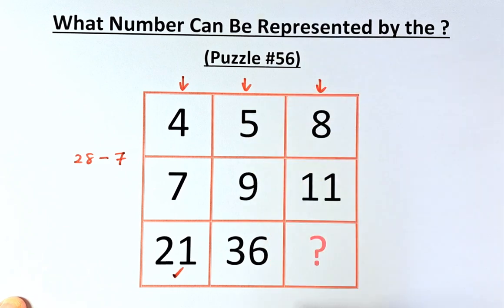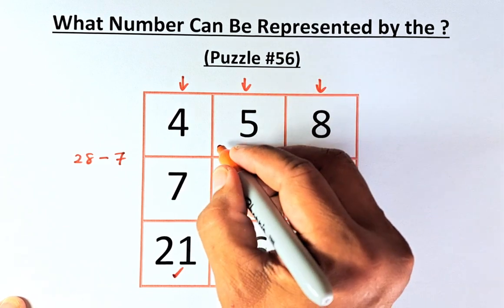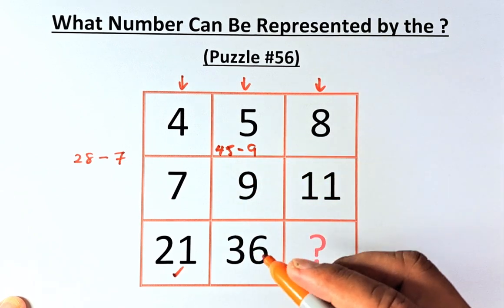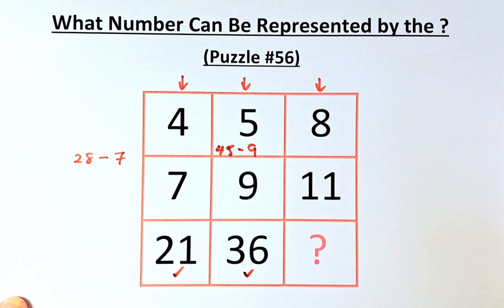Similarly, for the second column, 5 times 9 is going to be 45. And you minus 9, the second number, and the answer is going to be 36.